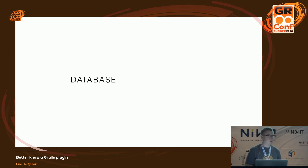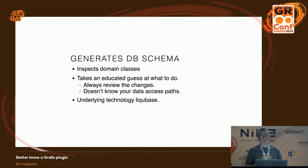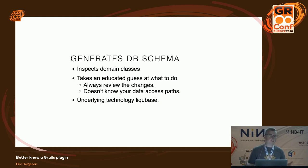Let's look at some database plugins. One of the awesome things about Grails is GORM — GORM knows the data model of your application, so the database migration plugin ties into that. It generates a database schema by inspecting your domain classes and takes an educated guess at what to do. It's not always right, so you always have to review your generated changelogs. It doesn't know how you access your data, so it won't create missing indexes — you'll have to do that yourself.